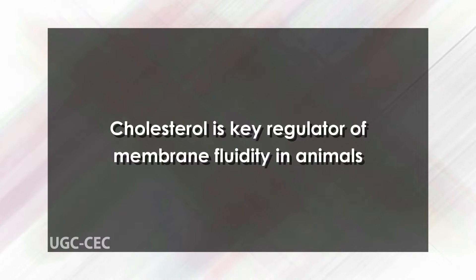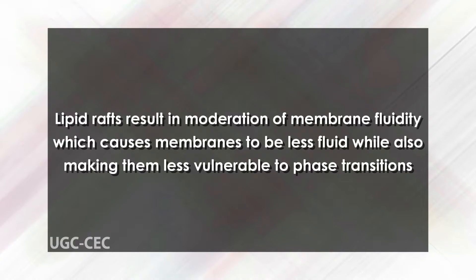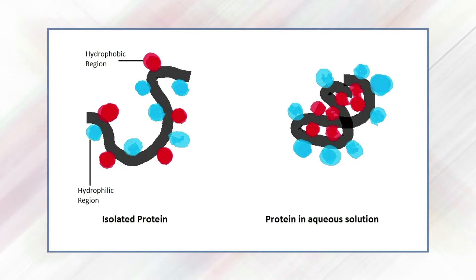Cholesterol is the key regulator of membrane fluidity in animals. It interacts with phospholipids to form specific complexes called lipid rafts that concentrate in specific regions of the membranes, moderating membrane fluidity and making membranes less vulnerable to phase transitions. Cholesterol is comprised of a steroid with a hydroxyl group at one end and a hydrocarbon chain at the other; its rings and hydrocarbon chain insert into the phospholipid bilayer via hydrophobic interactions, while the polar hydroxyl group interacts with the polar head groups of surrounding phospholipids.